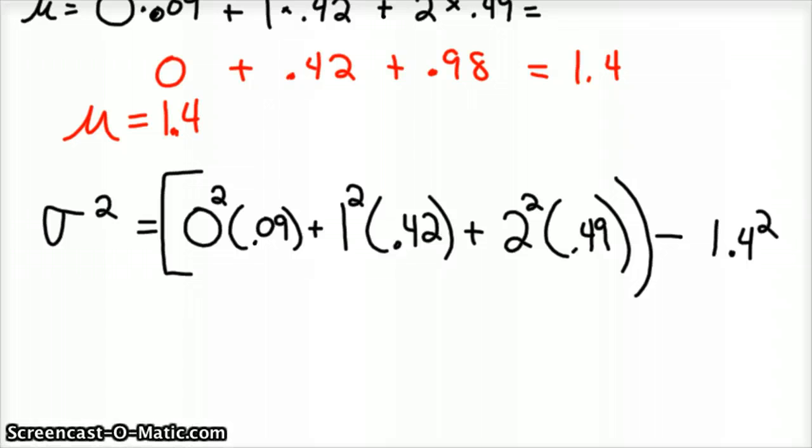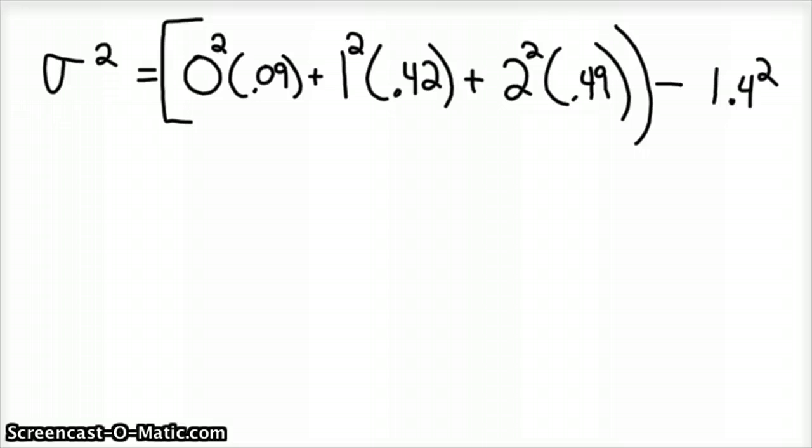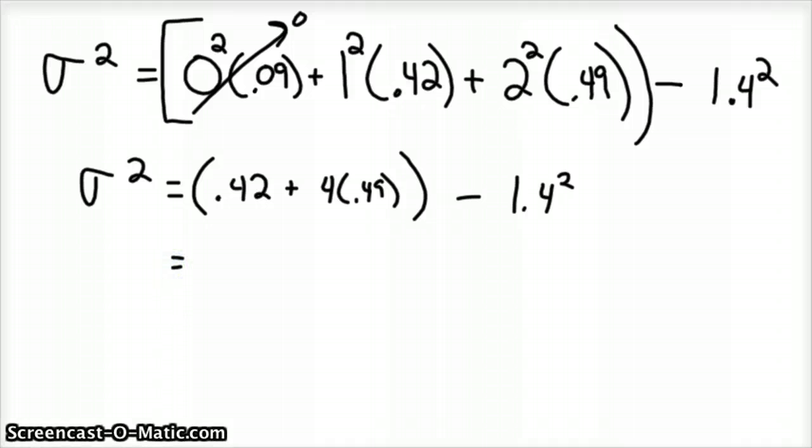My standard deviation, if we go ahead and simplify this. So inside the brackets, sigma squared is equal to, this is 0, 1 times, 1 squared is 1, so times 0.42 plus 4 times 0.49 minus 1.4 squared. So that would be 2.38, if you go ahead and calculate that, minus 1.4 squared, I'll just plug that in, and we'd have a variance of 0.42.